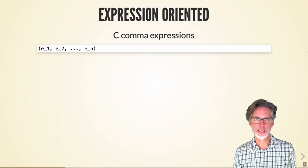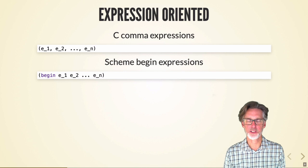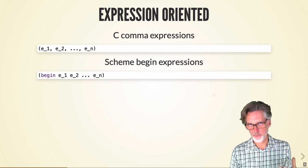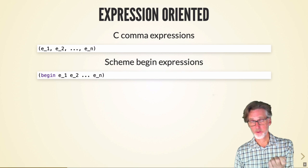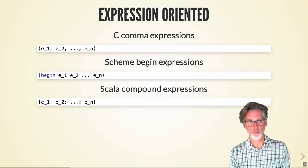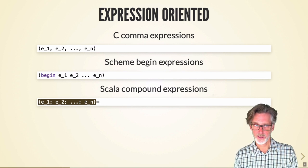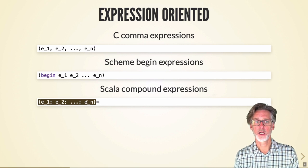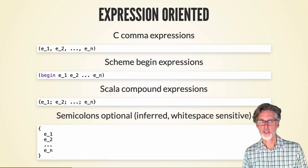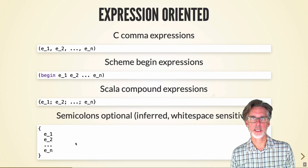Scala is expression-oriented. Recall C's comma expressions and Scheme's begin expressions — these are sequences of expressions where the first n-minus-one expressions are executed for side effect and the return value is the last expression. This happens in Scala as well, and we write them with curly braces. Between curly braces, separated with semicolons, we can have a sequence of expressions executed for side effect where the value is the final one. Semicolons are actually optional since newlines serve as separators.